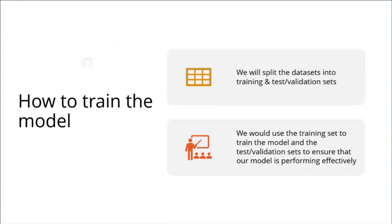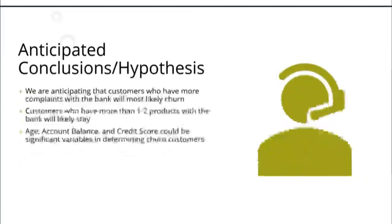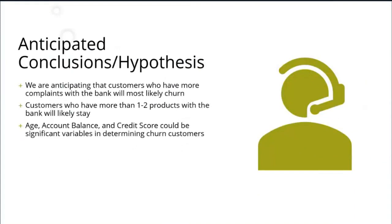We're going to train our model based on the data set we have, splitting our data 80/20 — 80 percent for training and 20 percent for testing. Some anticipated conclusions are that customers who have more complaints with the bank will most likely churn, and customers who have more than one or two products with the bank will most likely stay.